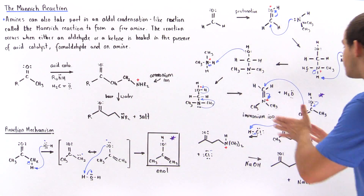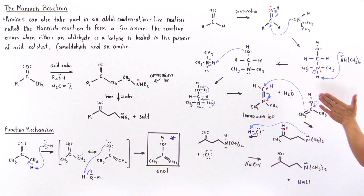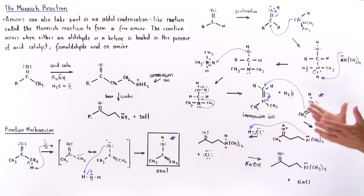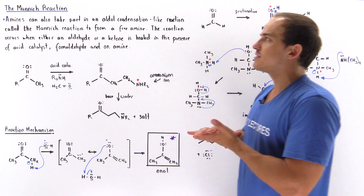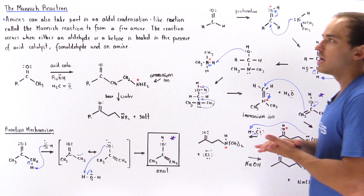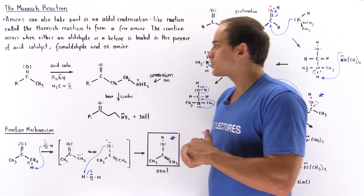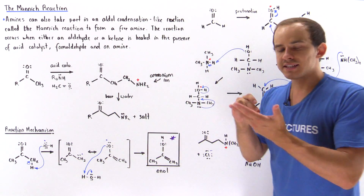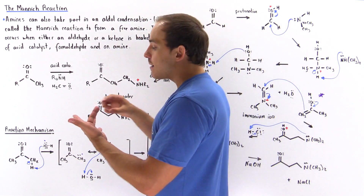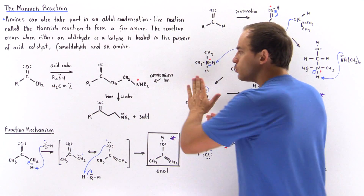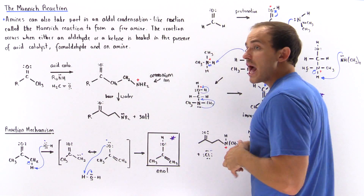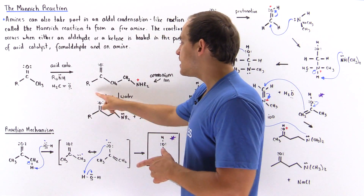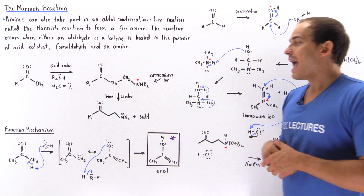The key aldol condensation-like step is what makes the Mannich reaction closely related to the aldol condensation. In summary, the Mannich reaction takes an aldehyde or ketone, mixes it with an acid catalyst in the presence of a secondary amine and formaldehyde to produce an intermediate, then adds base and water to yield the final free amine containing a carbonyl group attached to the nitrogen, along with a salt and water.